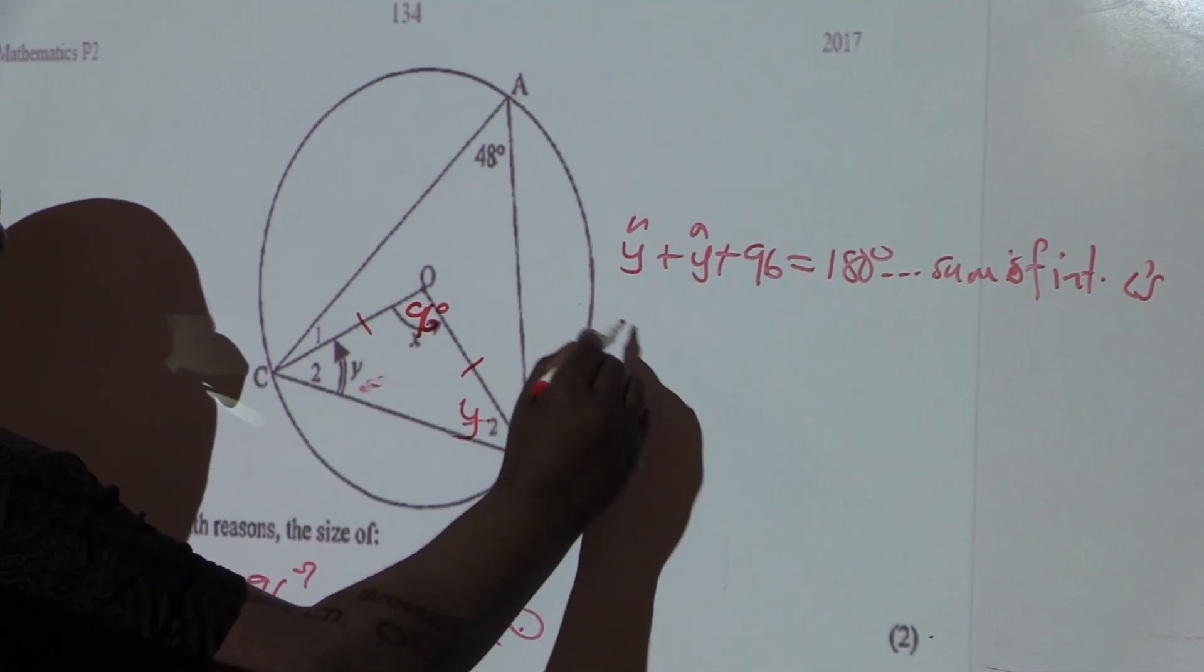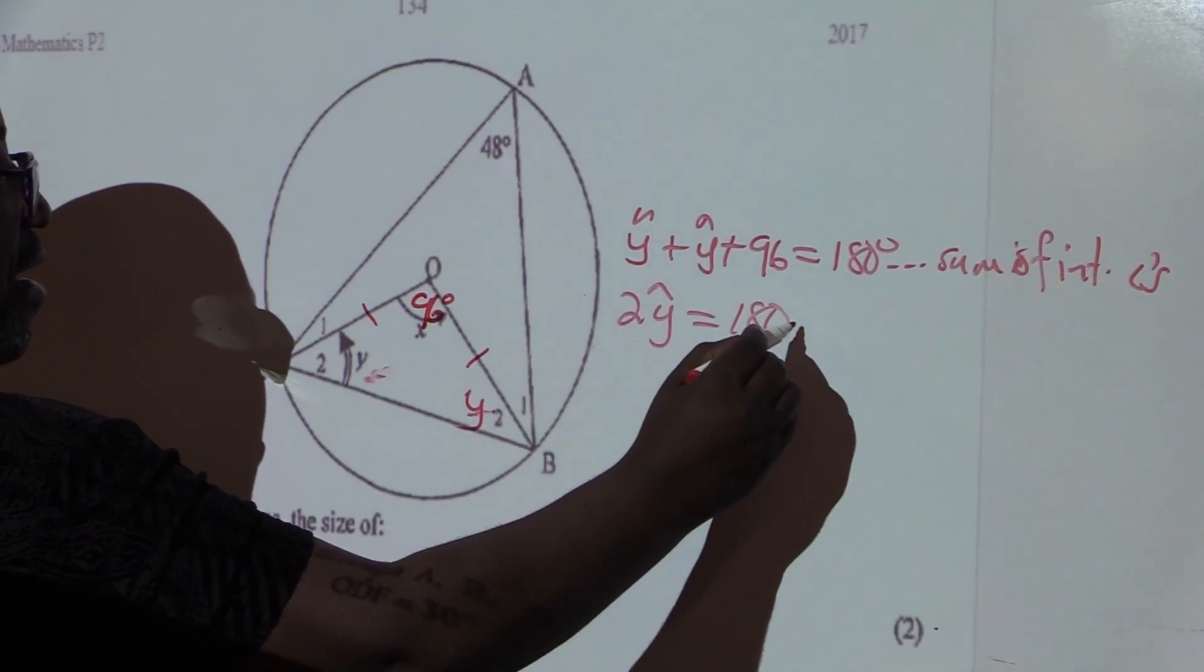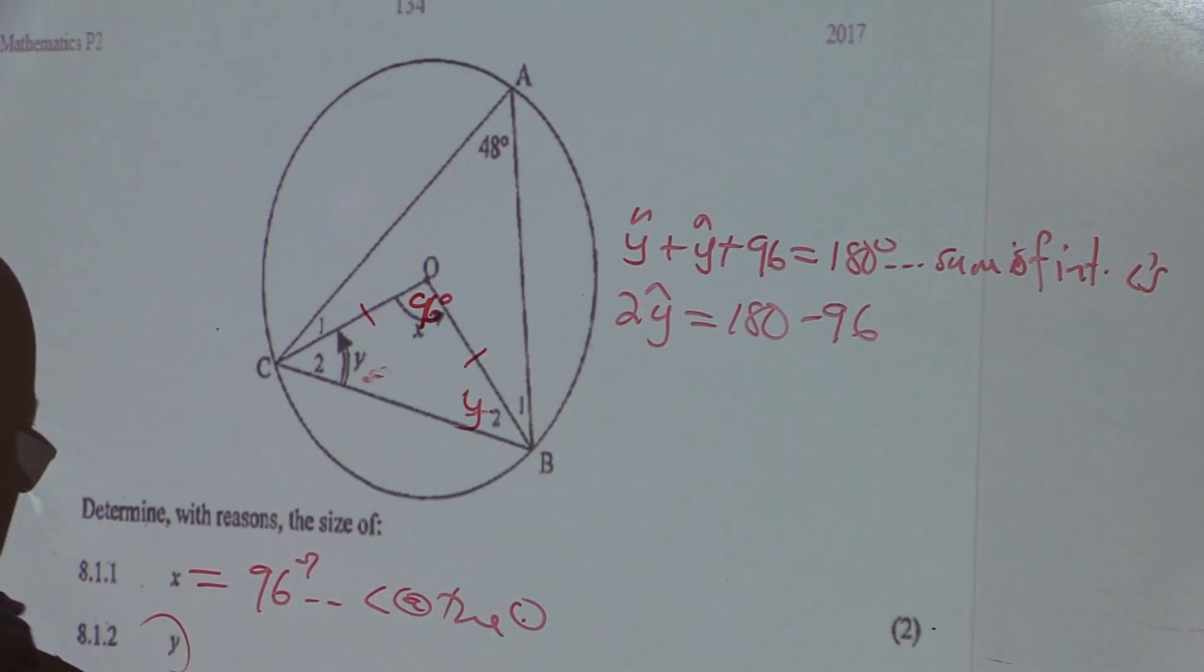How many Ys do I have here? Two angle Y is equal to 180 minus 96. Let me quickly get to that.